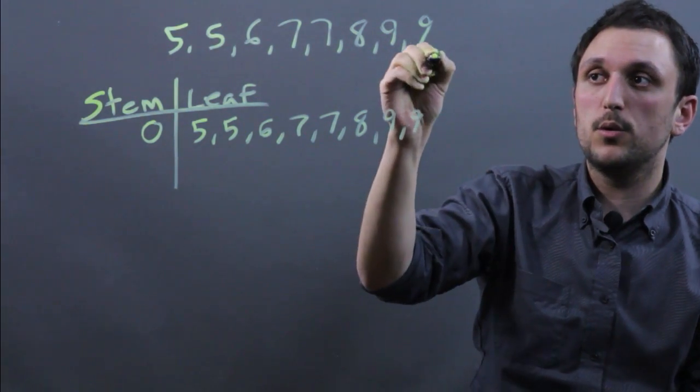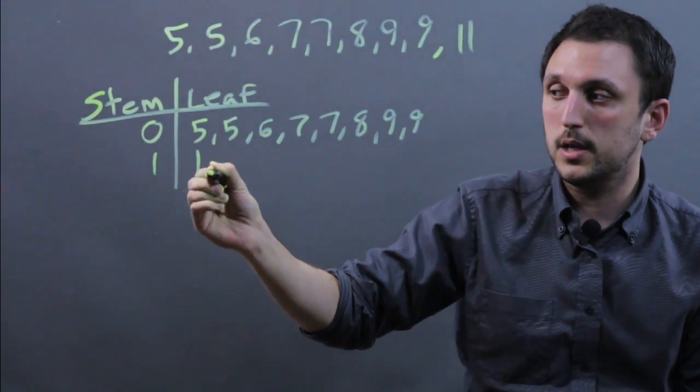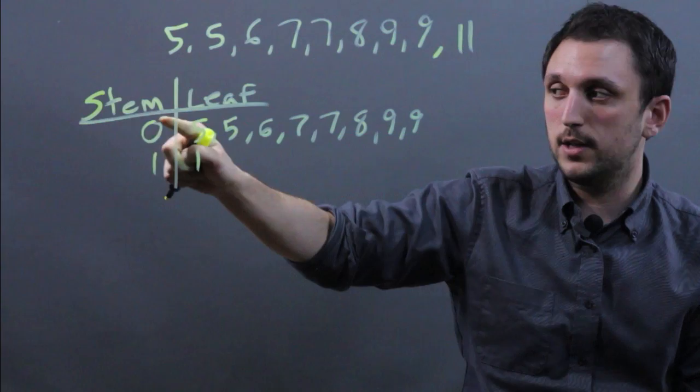If, for some reason, you then had the number 11, then you would put a 1 here and a 1 here. So the 1 here stands for 10. The 0 here stands for no 10.